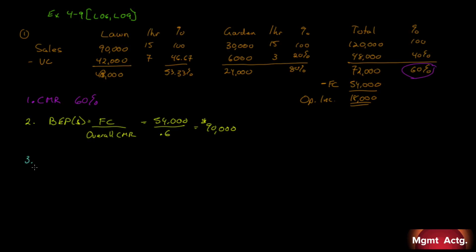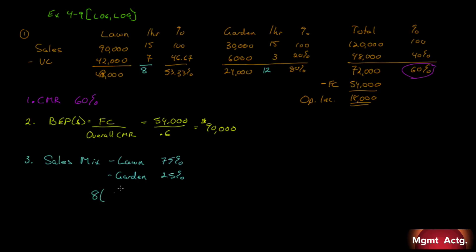For the weighted average, we need the sales mix. Lawn is $90,000 of $120,000 total, so 75% of sales come from lawn; garden is 25%. Contribution margin per unit: lawn is $15 minus $7 equals $8 per hour; garden is $15 minus $3 equals $12 per hour. Weighted average = ($8 × 0.75) + ($12 × 0.25) = $6 + $3 = $9 per hour.